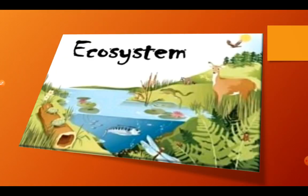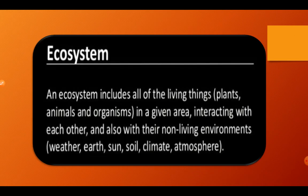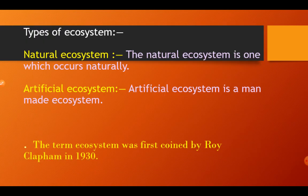An ecosystem includes all of the living things like plants, animals, and organisms in a given area, interacting with each other and also with their non-living environments like weather, sun, earth, soil, atmosphere, and climate. The ecosystem is basically the coexistence of biotic and abiotic components in an area.